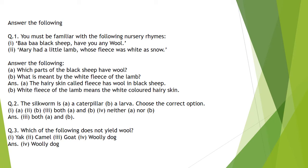Question number 2: The silkworm is a caterpillar or a larva — choose the correct option. The silkworm is both a caterpillar and a larva, because caterpillar is the larval stage. Question number 3: Which of the following does not yield wool — caterpillar, yak, camel, goat, or woolly dog? The answer is woolly dog, because we have not heard of woolly dog yielding wool, they do not have much hair and we cannot shear them.